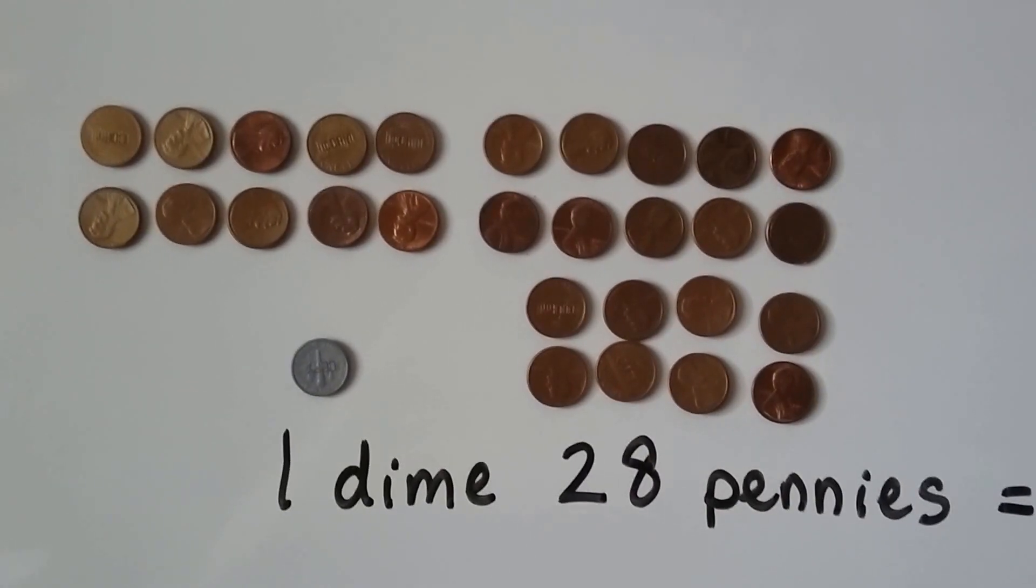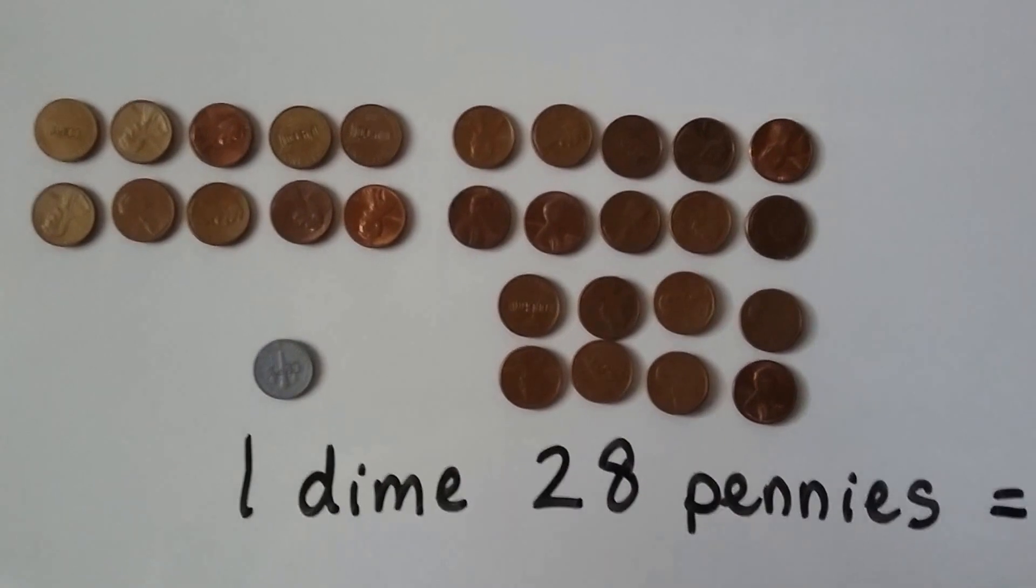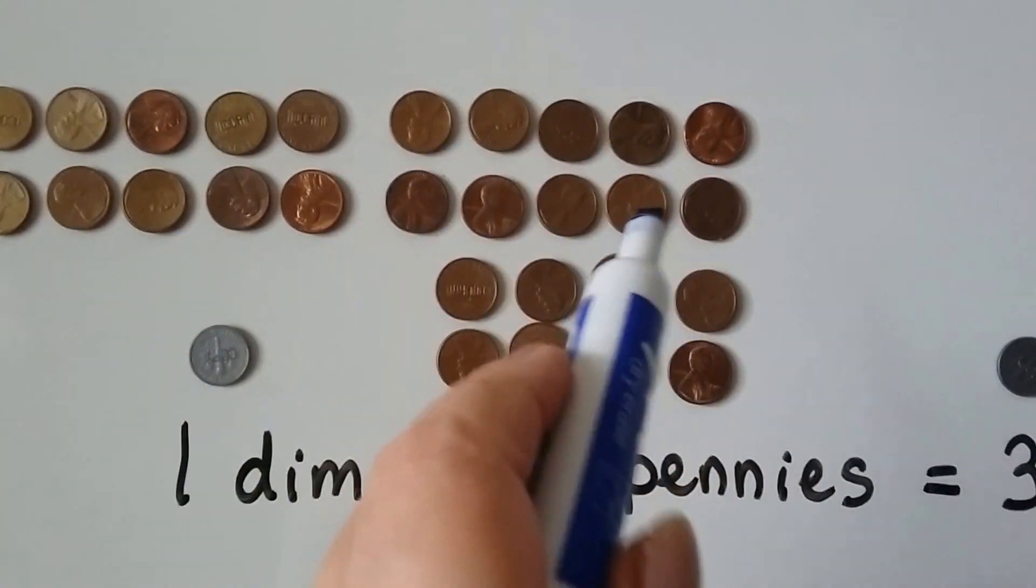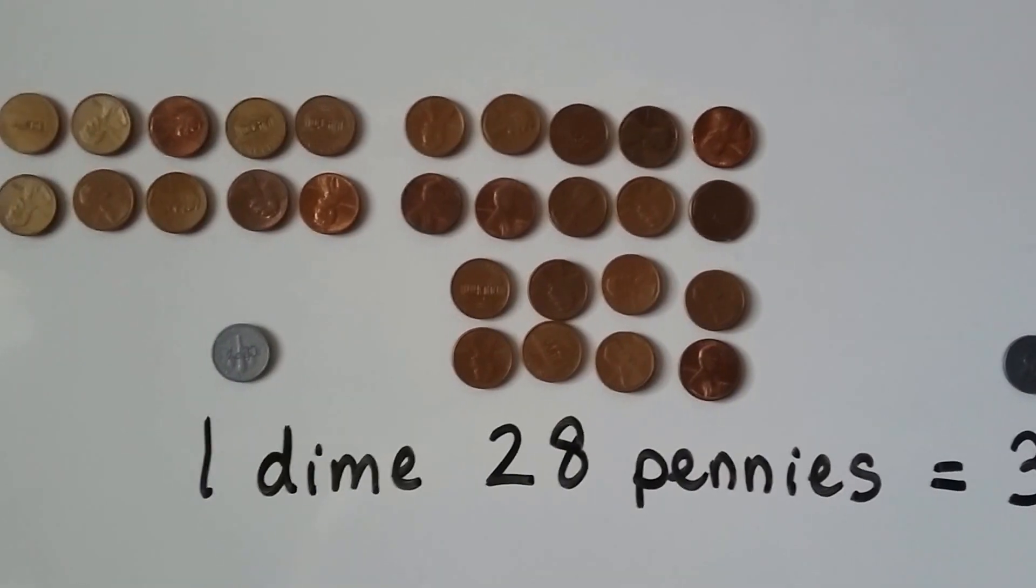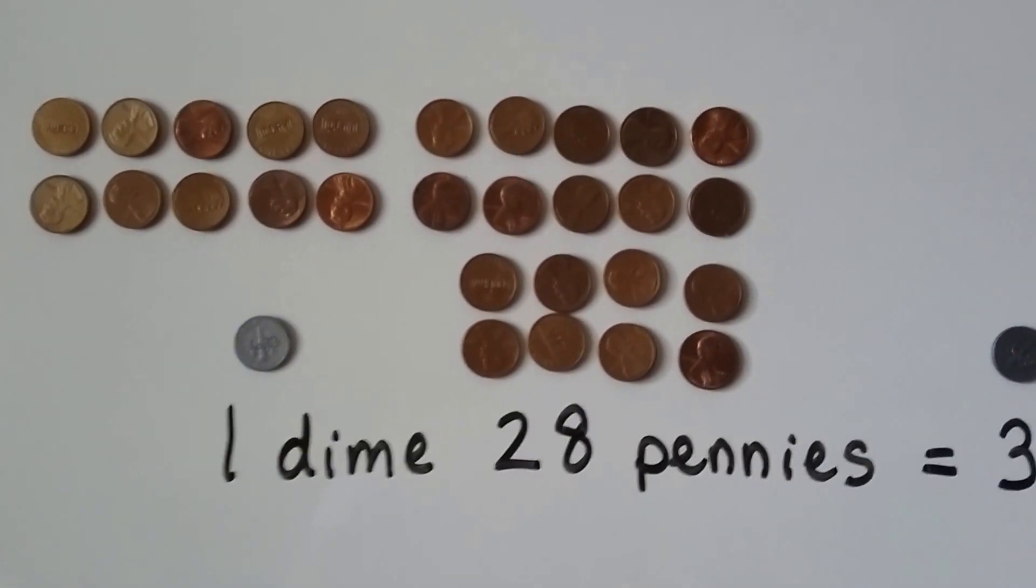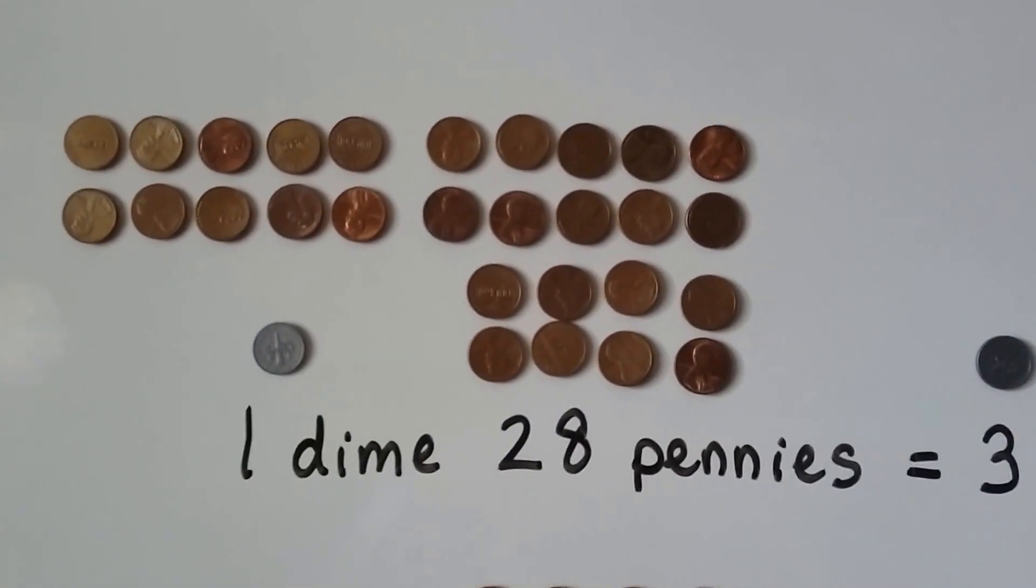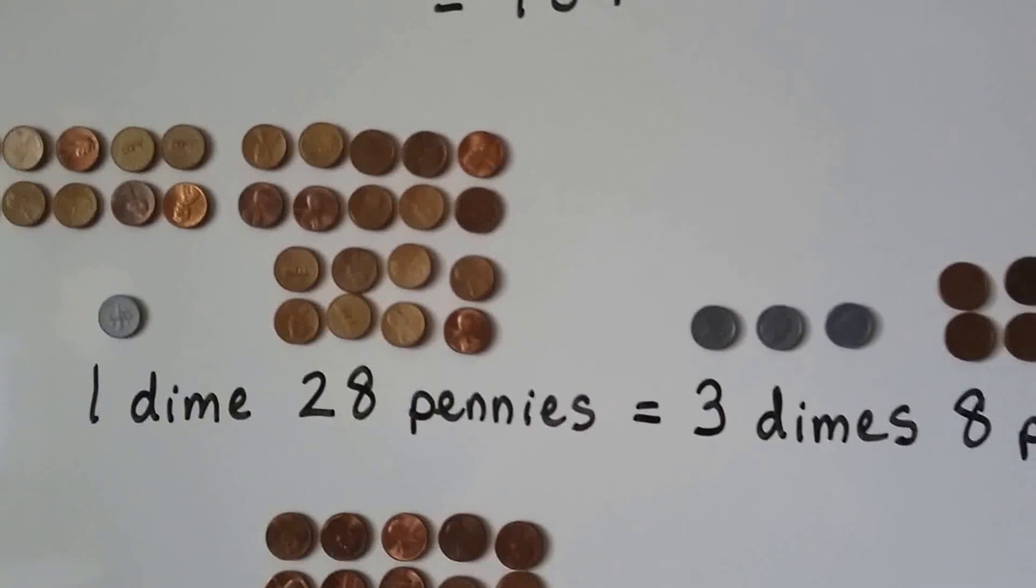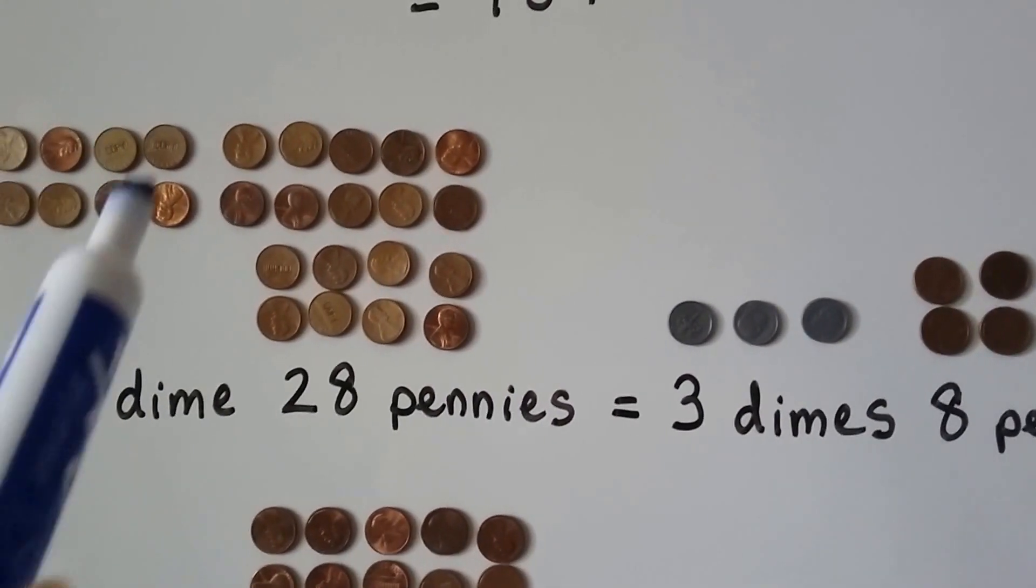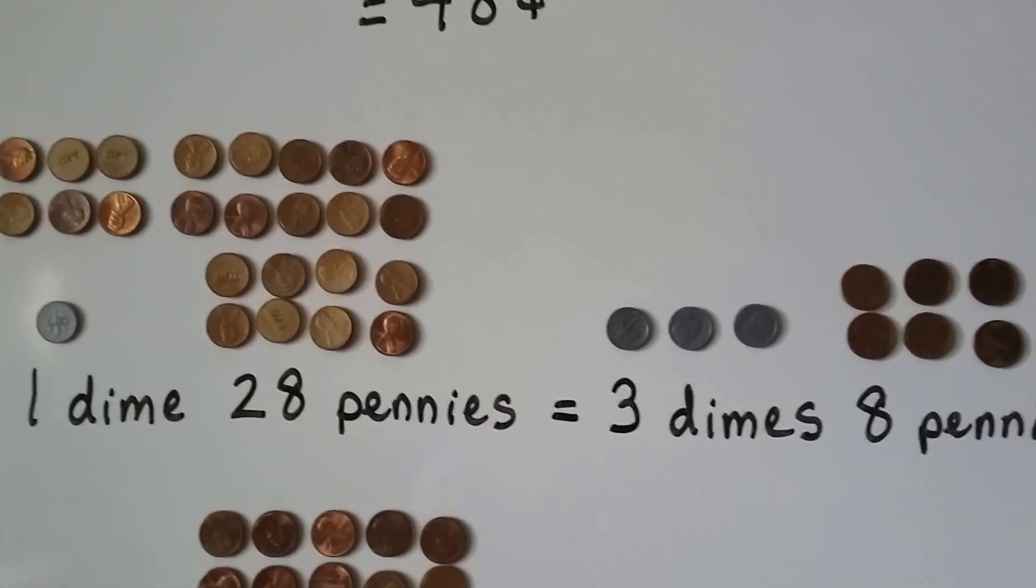Here we have one dime and 28 pennies. We've got 10 pennies, 20 pennies, and eight pennies. That's 28 pennies. We have one dime, that's one ten, and 28 ones. We can regroup them to be three dimes and eight pennies. We can trade that for a dime and that for a dime and have eight pennies left over.